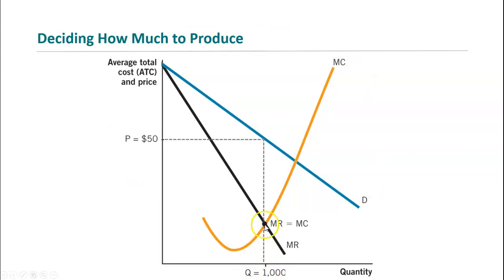For the firm shown in this graph, the profit-maximizing quantity is at the dotted line where quantity equals 1,000. Once you've chosen your level of output, follow that dotted line up to the demand curve to find what people are willing to pay. The monopolist will charge $50 in this case. Choose your quantity based on where marginal revenue equals marginal cost, then choose your price based on the demand curve — what are people willing to pay?